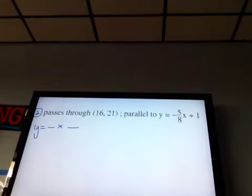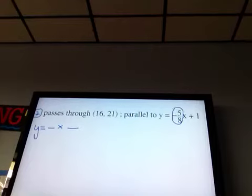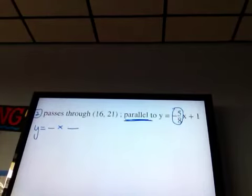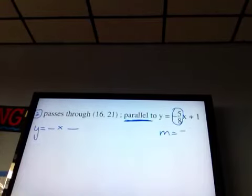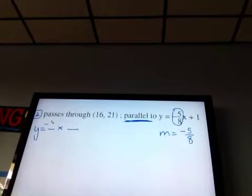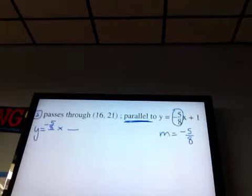m is always with x. So this m is negative 5/8. My line is parallel to that. So what is my m? Negative 5/8. The same. So I'm going to go fill that in my first blank. So parallel have the same slope, but you've got to know the slope is the m with the x.